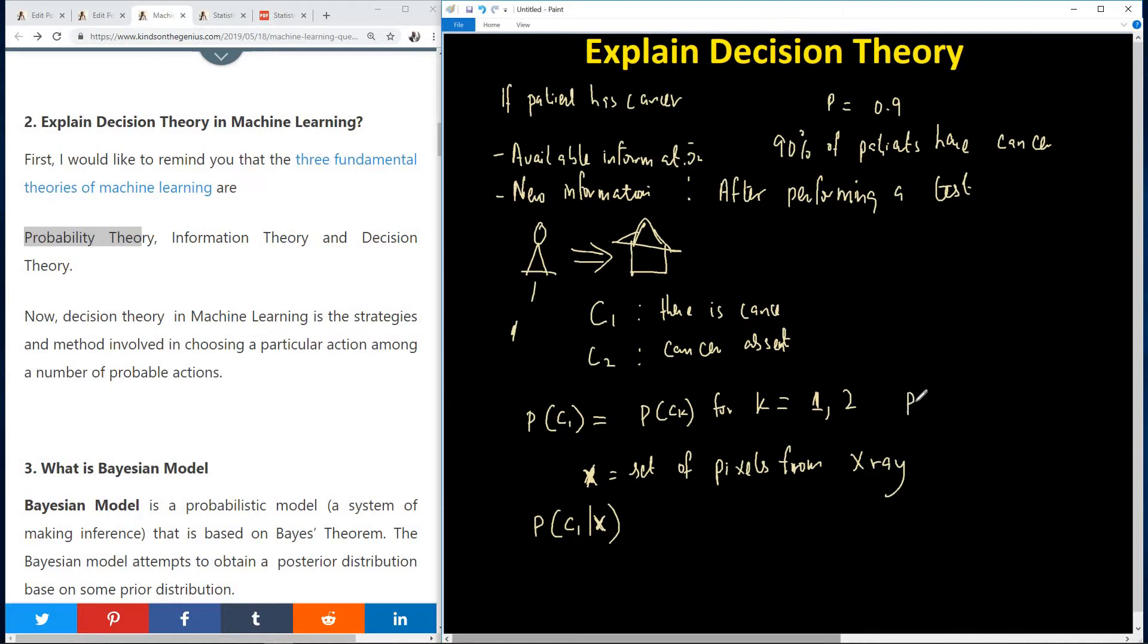Now this is called prior probability. Take notes. And this is called posterior probability. So given the prior and the posterior probability, the physicians can now make a decision.